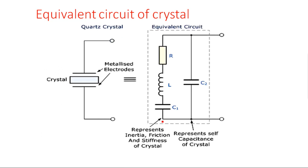The equivalent circuit of this crystal is similar to a series resonance RLC circuit. The crystal oscillator generally operates around 30 MHz frequency. The equivalent resistance can be written in terms of a series RLC circuit, where C2 represents the self-capacitance of the crystal, and the series RLC circuit represents the inertia, friction, and stiffness of the crystal.